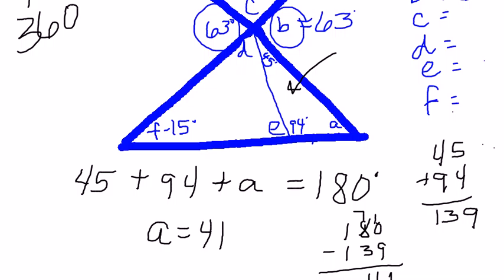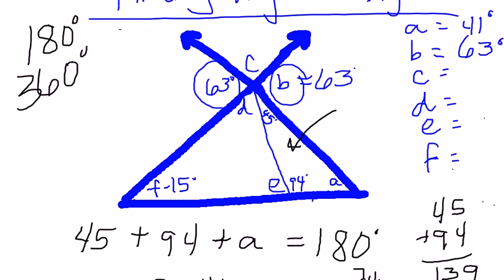Next, let's figure out angle C. If I look at angle B, which I just solved for, angle B is 63 degrees. Angle C is supplementary to angle B, so we know from a previous section that angle B and angle C should add up to 180 degrees.